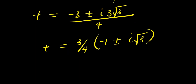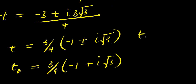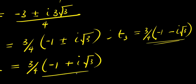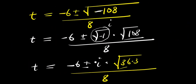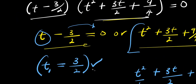We now have two complex solutions for t. Recalling that t₁ was found earlier, t₂ equals 3 over 4 times negative 1 plus i root 3, and t₃ equals 3 over 4 times negative 1 minus i root 3.